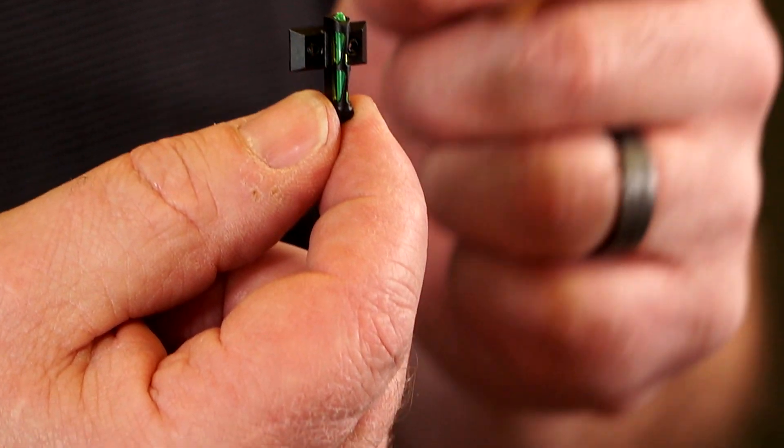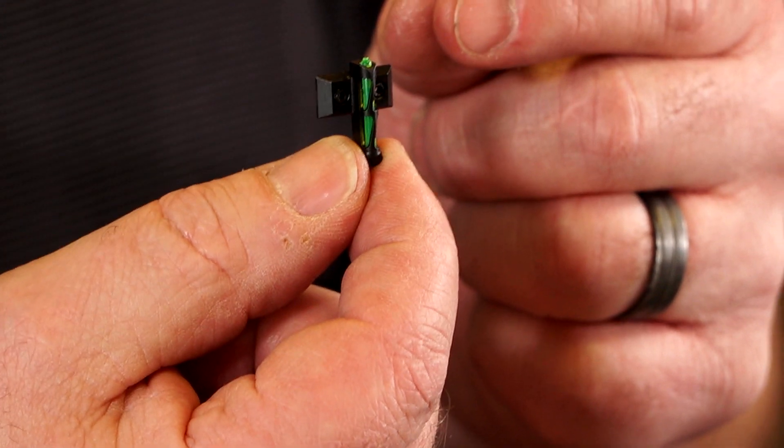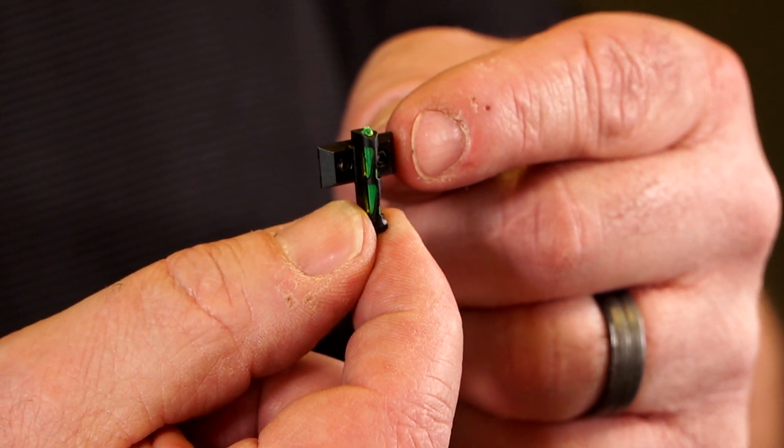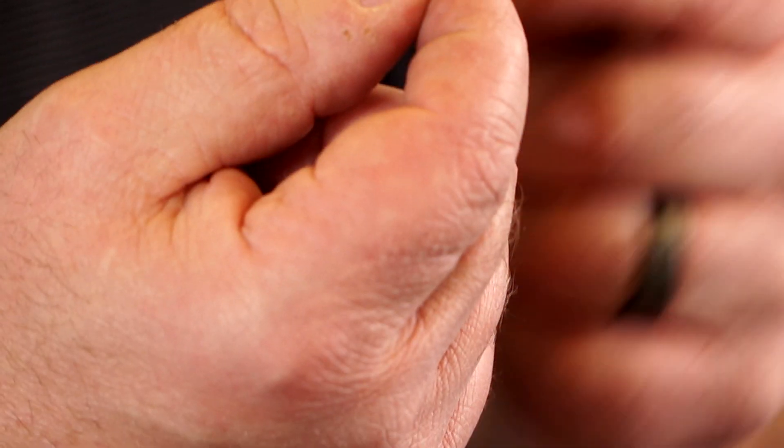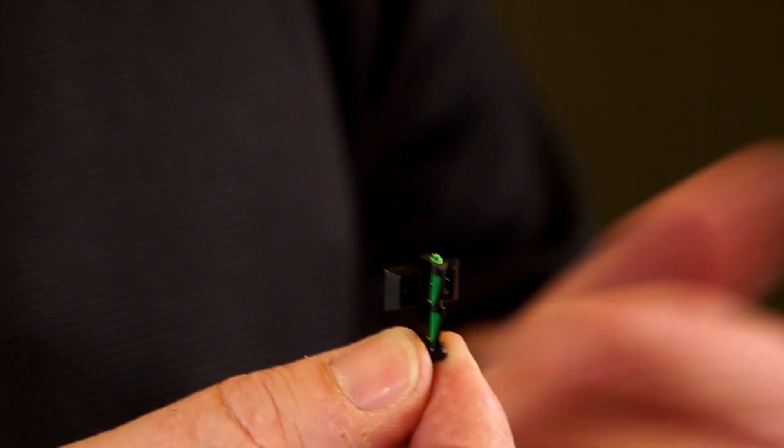One point about these set screws: these are an Allen drive set screw, but the Allen drive goes all the way through the set screw. So you're going to see a hole clear through the set screw. A lot of times it appears as though there's no screw in it at all, but they are installed in the sight base.